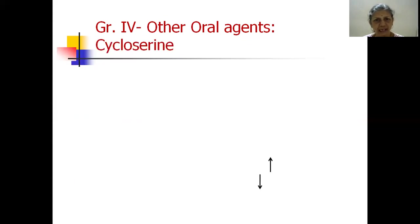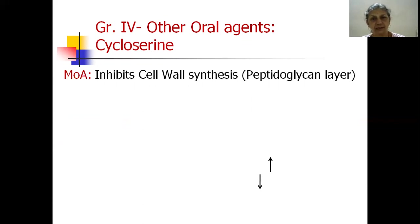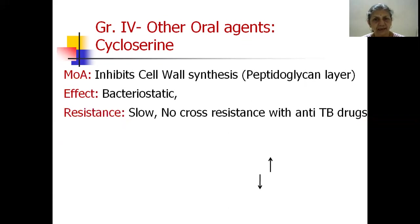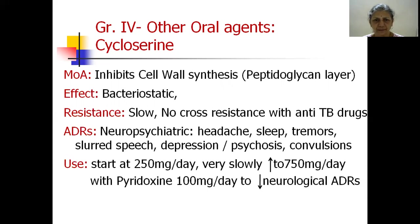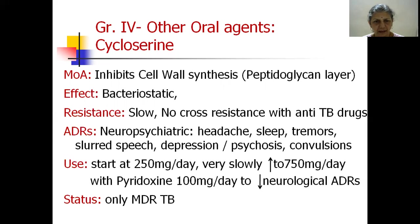The next Group 4 agent is cycloserine, which inhibits cell wall synthesis by acting on the innermost peptidoglycan layer — inhibiting cross-linking like beta-lactams. It gives a bacteriostatic effect. Resistance can occur but is slow to develop and, importantly, it shows no cross-resistance with other anti-TB drugs. Important adverse effects are neuropsychiatric: headache, sleep disturbances, tremors, slurred speech, depression, psychosis, and even convulsions. It is also started at low doses of 250 mg per day, gradually increased to 750 mg per day, with pyridoxine 100 mg per day to reduce neurological adverse effects. Because of all these toxicities, it is used only for multiple drug-resistant tuberculosis.